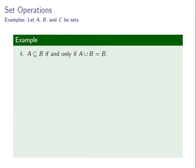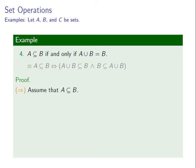Consider the claim: A is a subset of B if and only if A union B is equal to B. Recall that A union B is equal to B is equivalent to A union B is a subset of B and B is a subset of A union B. We will give a two-part proof of this claim.